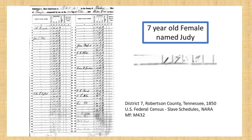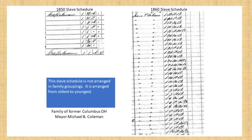The record gives me lots of information, but I want to be specific that this seven-year-old female named Judy is the one I'm looking for. It's appropriate that we find some additional information. I want to share some thoughts about using a slave schedule, or any record that is not specific regarding family information — what things might happen as a result.